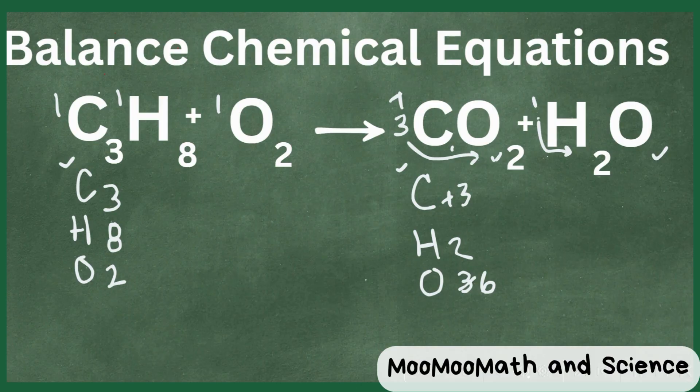Now let's look at hydrogen. We have 8 on this side, 2 on this side. So why don't we just change this 1 to a 4. So 4 times 2 is now 8.